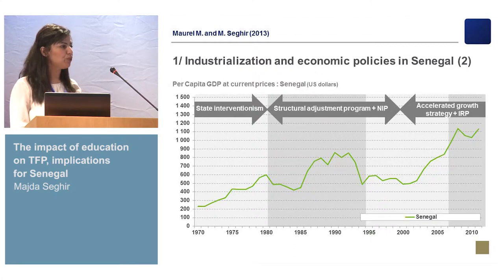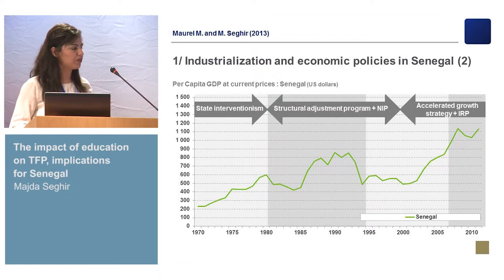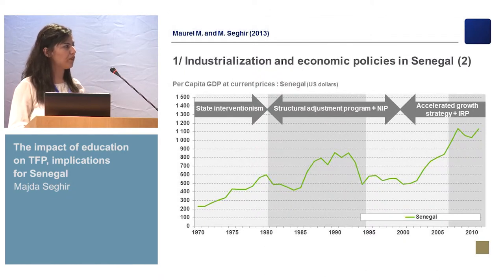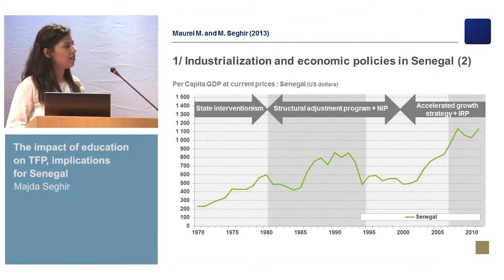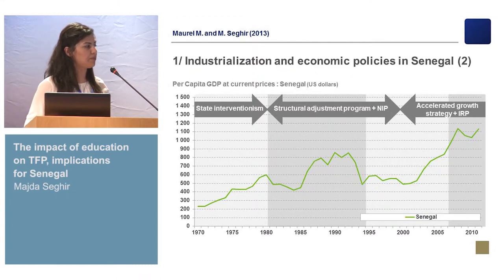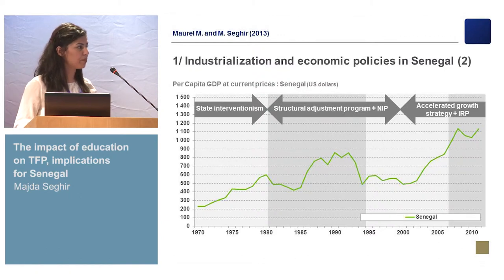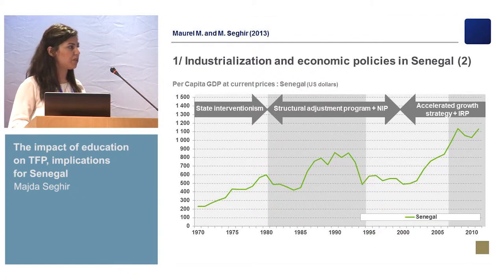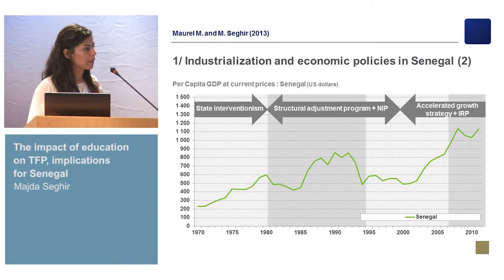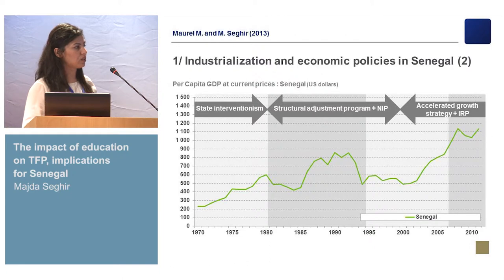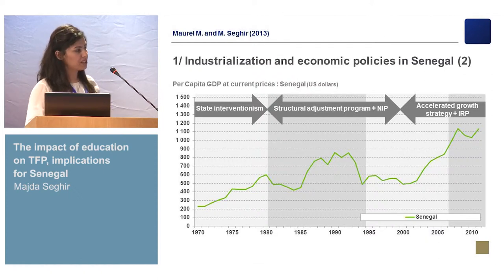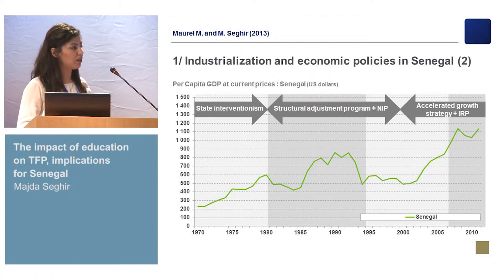The new objective was to remove import restrictions and raise the contribution of high value-added activities in exports. However, this policy failed. Indeed, 50% of firms faded out and some major companies did not survive the opening of the domestic market to foreign competitors. After the devaluation and since 2000, the government adopted a new accelerated growth strategy with a new industrial redeployment policy. The objective was to increase the contribution of the manufacturing sector in economic growth by at least 25% by the end of 2010.